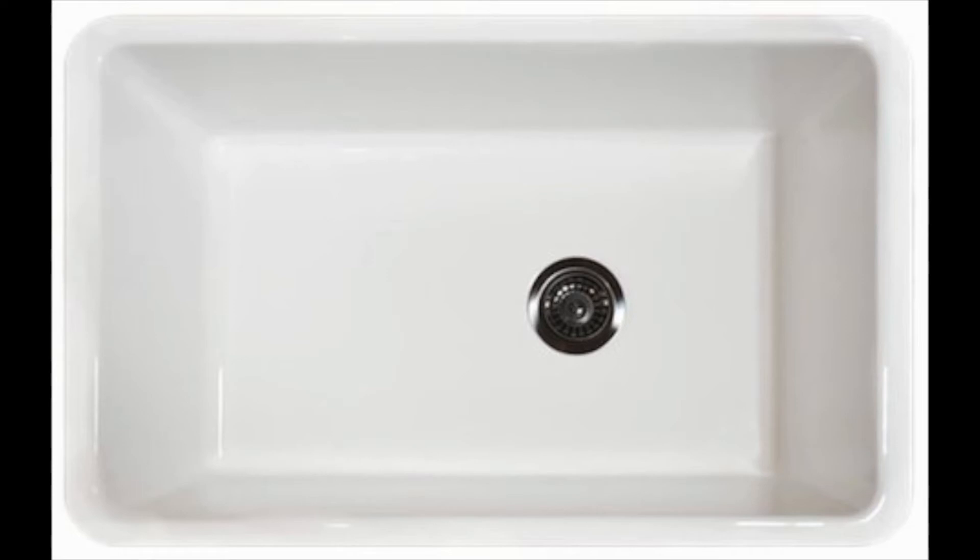This single bowl undermount sink is about 10 inches deep and a perfect rectangle. The dimensions are 28 inches by 17 inches by 10 inches. This size is ideal for a large family or household with multiple renters.